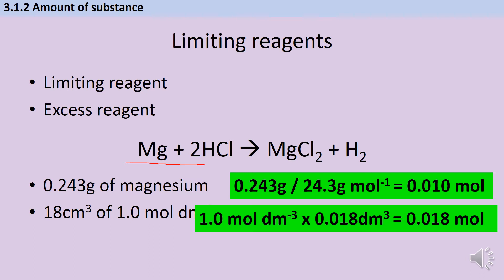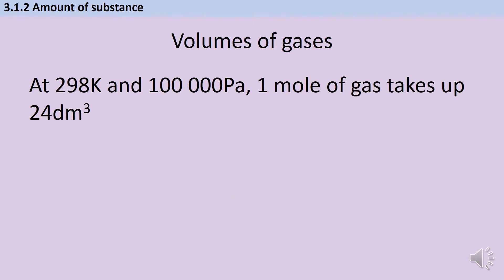If you just looked at those numbers straight away, you might think the acid is in excess because there's more of it. But looking at the equation, there's a coefficient of 2 in front of the hydrochloric acid, meaning for every 1 mole of magnesium I need 2 moles of HCl. To completely react with 0.010 moles of magnesium, I would need 0.020 moles of acid. And to react with my 0.018 moles of acid, I only need 0.009 moles of magnesium. So it's actually the magnesium that's in excess, not the acid.